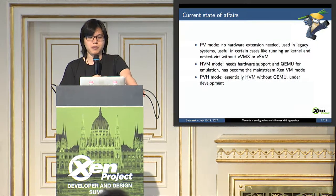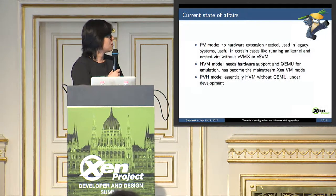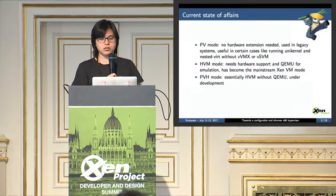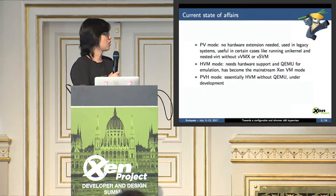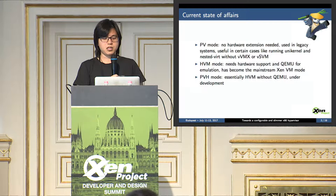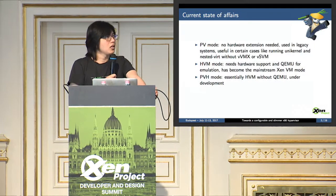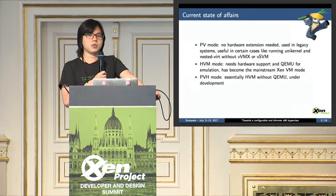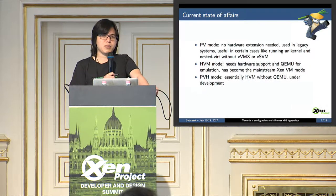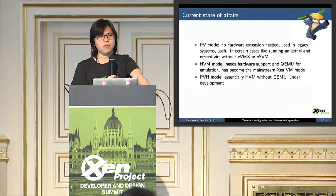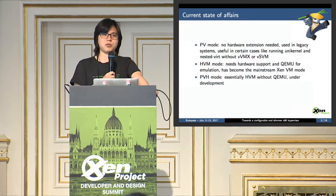The second mode is HVM mode. This mode is made possible by the introduction of hardware virtualization extensions. It requires QEMU to do certain emulation, and it has become the mainstream Xen VM mode recently. The third mode is PVH mode, which is essentially HVM without QEMU. It's still under development, but the guest ABI has been declared stable in the 4.8 release, so you can start porting your guest operating system to this mode now.